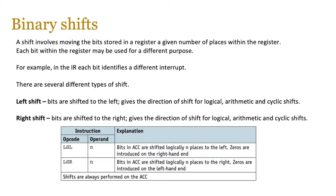For example, in the index register each bit identifies a different interrupt. There are several different types of shifts — the most straightforward to understand are left and right shifts. Bits shifted to the left gives the direction of shift for logical, arithmetic, and cyclic shifts, and bits shifted to the right likewise gives the direction for all those shift types. If you're moving two places to the left, you simply move the bits two places to the left.